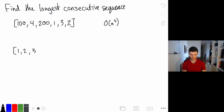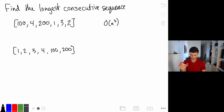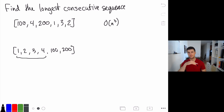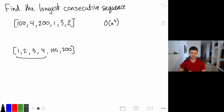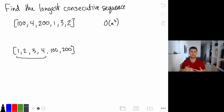If we sorted the input we'd have 1, 2, 3, 4, 100, 200. Now it's pretty obvious — it would be easy to find all the consecutive subsequences because they're all going to be next to each other and actually in consecutive order. We'd just look through and for each number check whether the next value is one more than the current value, and that tells us whether those two are consecutive. We just keep building up. It's a little bit trickier to code than you might think, so definitely practice it.